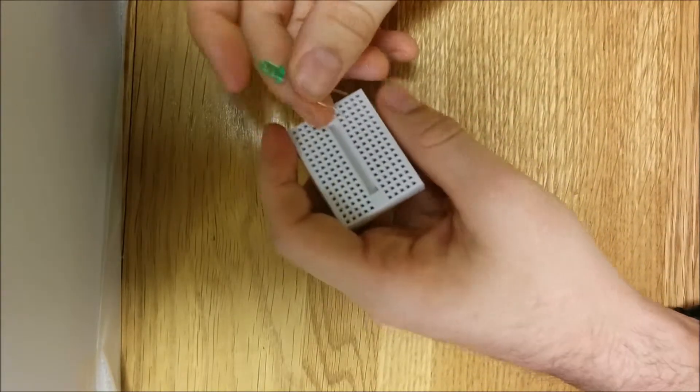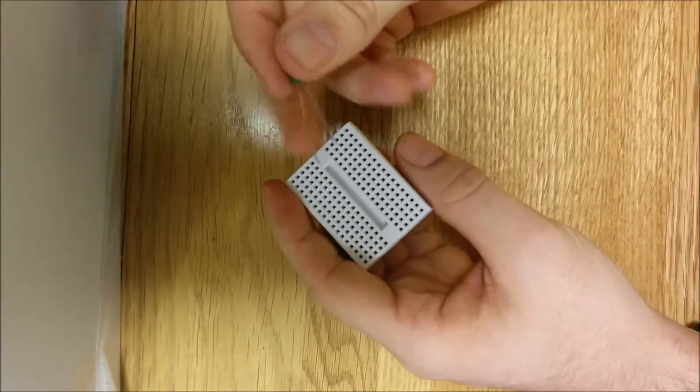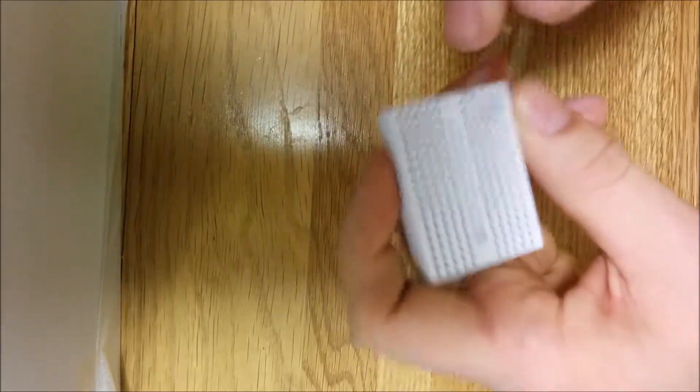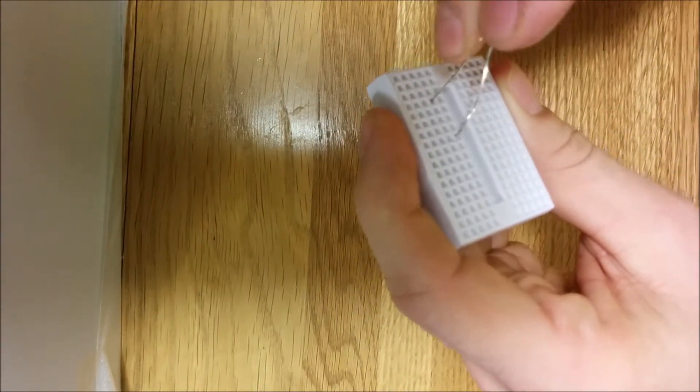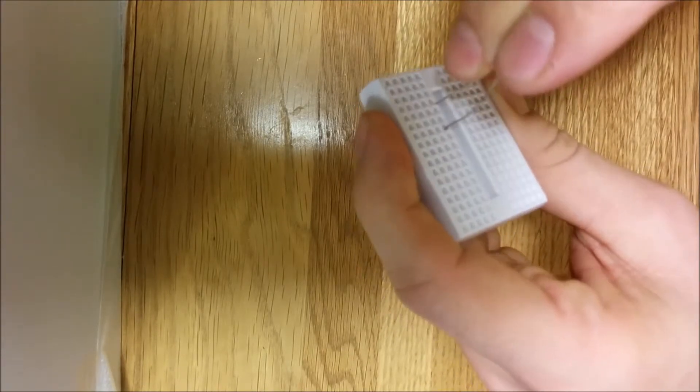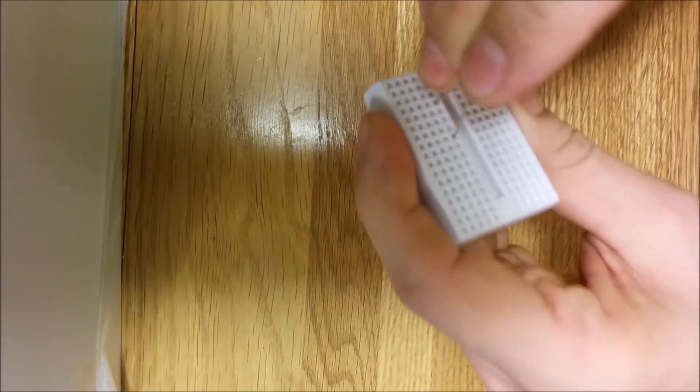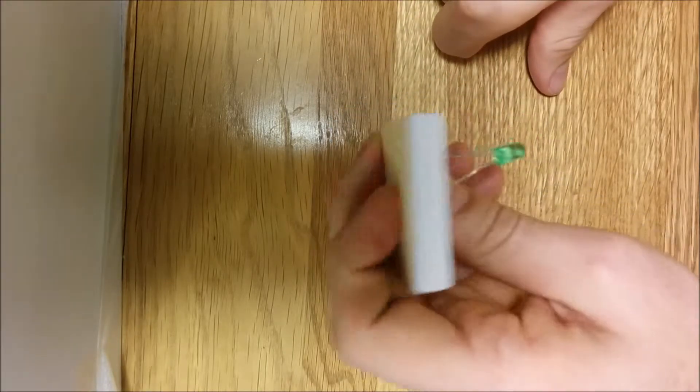Now we will assemble the LED on protoboard. We connect one leg in a hole, and the other leg in another hole. Like this.